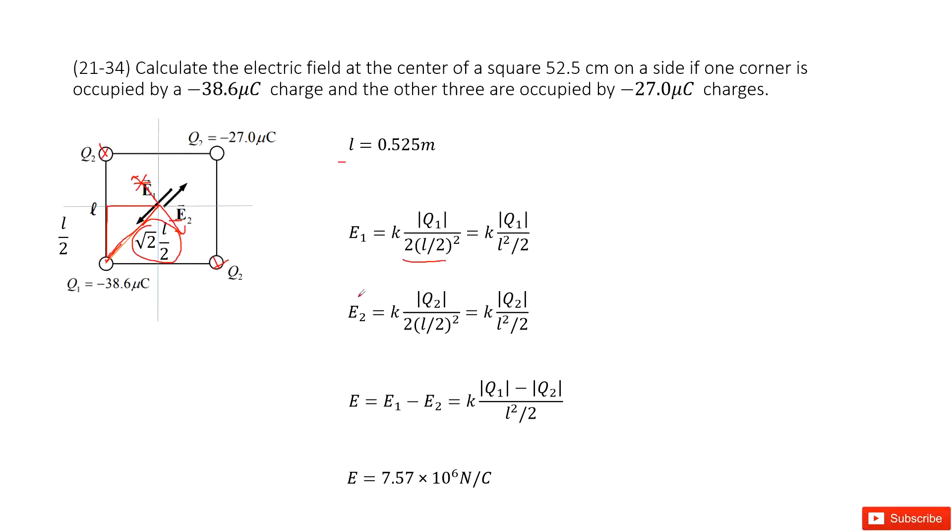And very similarly, we can find the magnitude for the E2 in this way. But we know E1 and E2 are in opposite directions. Because E1 radially points to q1 and E2 radially points to q2.